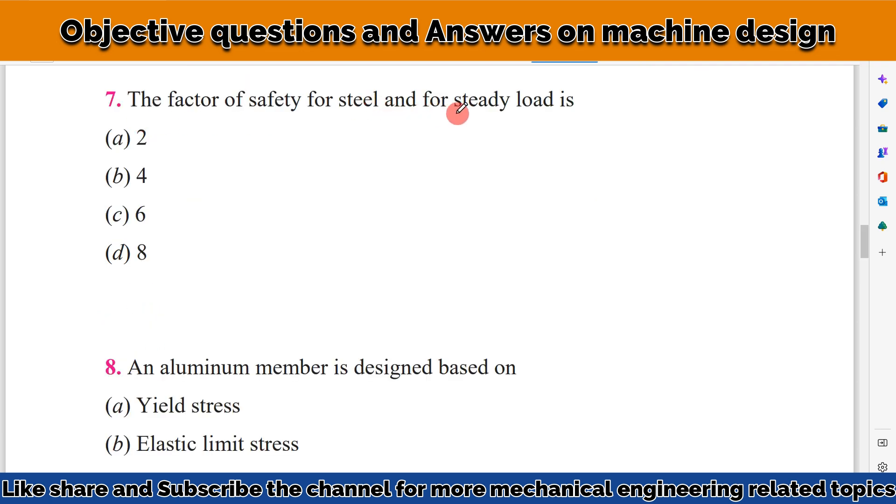The factor of safety for steel and for steady load is? If you see the options here, the factor of safety for steel and for steady load is 4.